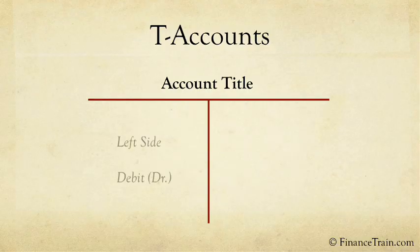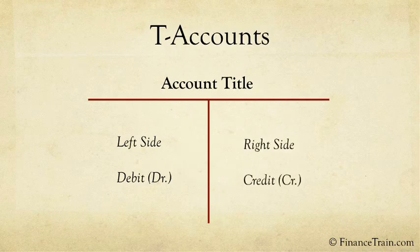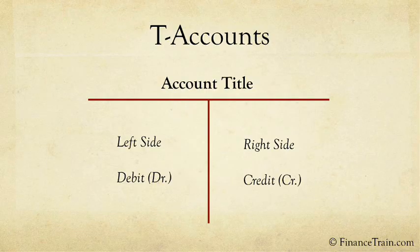On the left side, debits are recorded and on the right side, credits are recorded. This helps in ascertaining the ultimate position of each item at the end of the accounting period. For example, if we were looking at the account of a vendor,